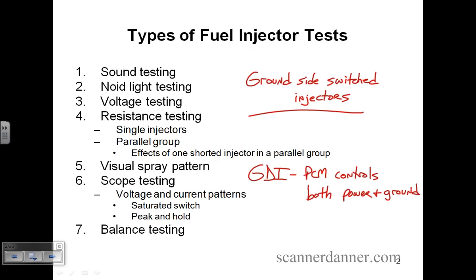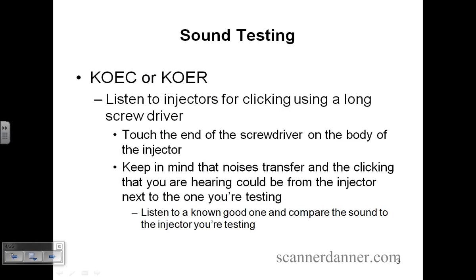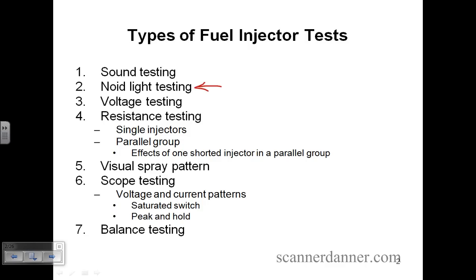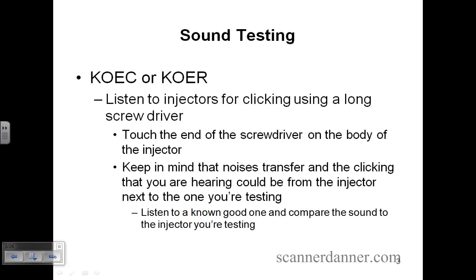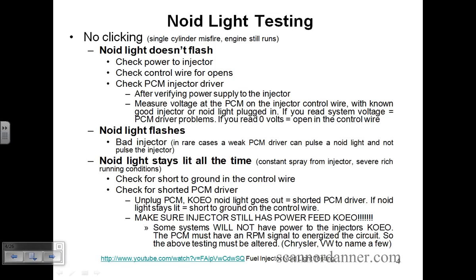Another test we can do is the noid light test. A noid light is a specific light bulb that you plug into the injector connector — it's made specifically for that circuit. To put it in the circuit electrically, we remove the injector connector and install a light bulb in its place. We're looking to see if the light bulb flashes on and off. So ask yourself: is this noid light test testing the injector winding, or is it testing the electrical circuit? It's testing the electrical circuit.